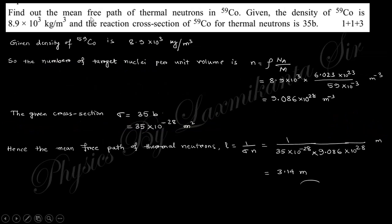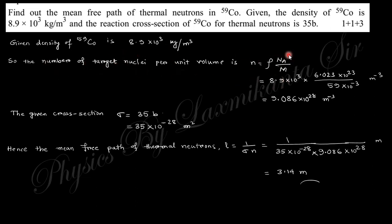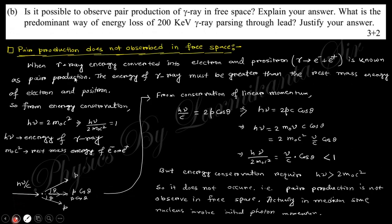Next question: find out the mean free path of a thermal neutron in Cobalt-59. Given density and reaction cross section of 35 barn. The number of target nuclei per unit volume is N = (density × Avogadro's number) / molar mass (59). After calculating the number density N and using the cross section σ = 35 barn = 35 × 10⁻²⁸ m², the mean free path = 1/(σN) = 3.14 meters.